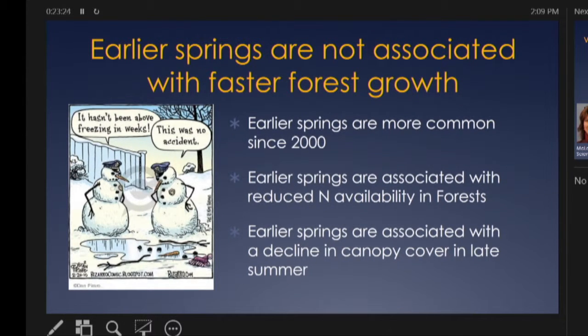Earlier springs are not necessarily associated with faster forest growth. We're seeing that earlier springs are associated with reduced nitrogen availability and a decline in canopy cover. We do see a little bump in total production with a longer growing season, but it's not nearly as big as you would expect — it's tied in with this nitrogen story.